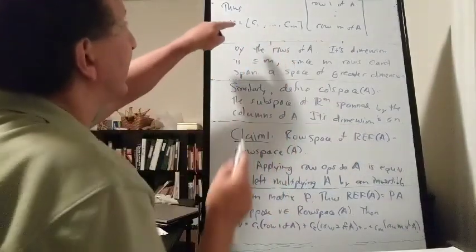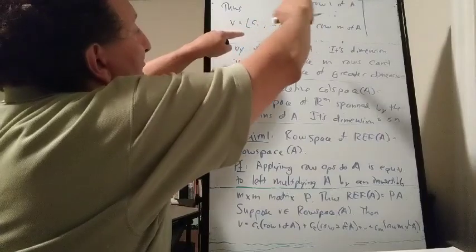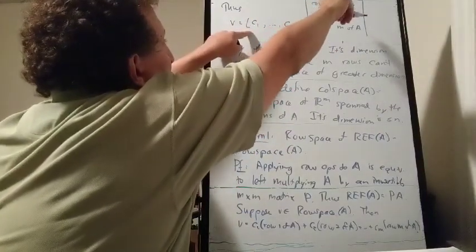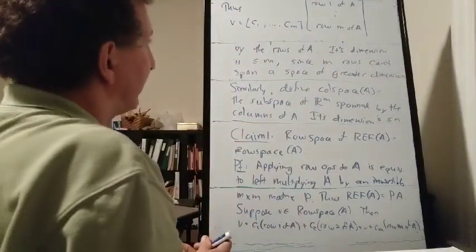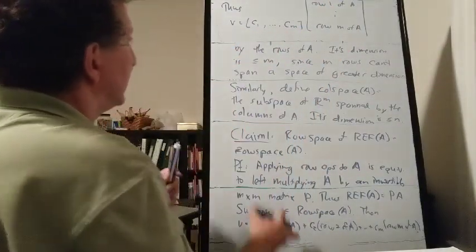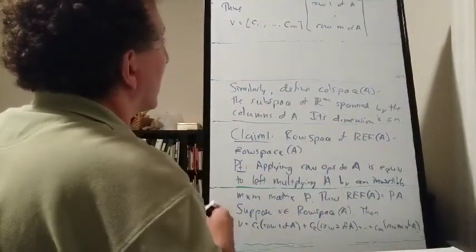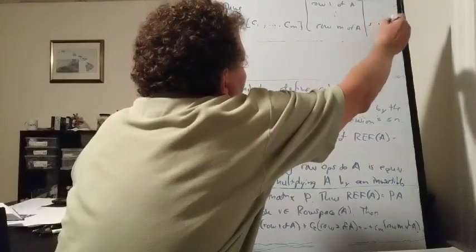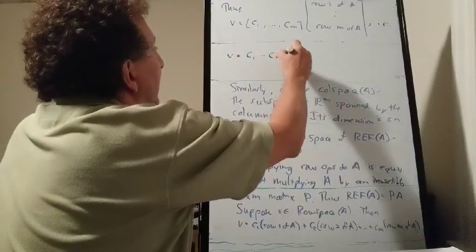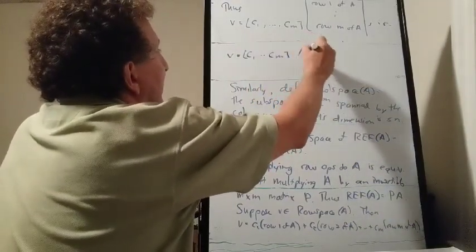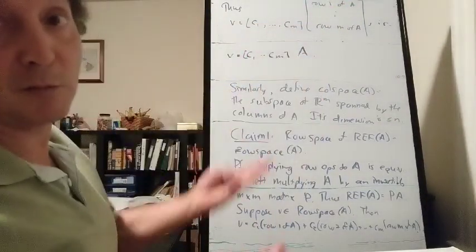We can write V as the row vector (C1 through Cm) times the matrix whose rows are row 1 of A, row 2 of A, row 3 of A, etc. — which is just A itself. So V equals (C1 through Cm) times A.